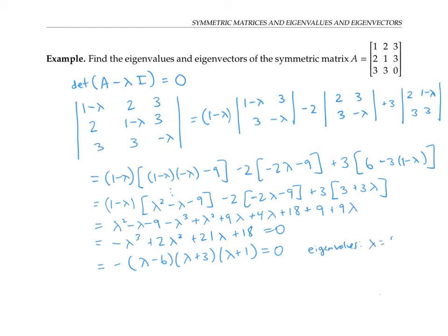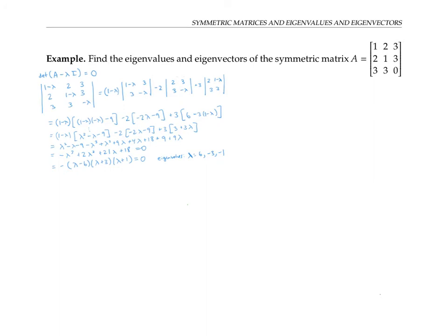They're going to be lambda equals six, negative three, and negative one. Next, let's figure out our eigenvectors.